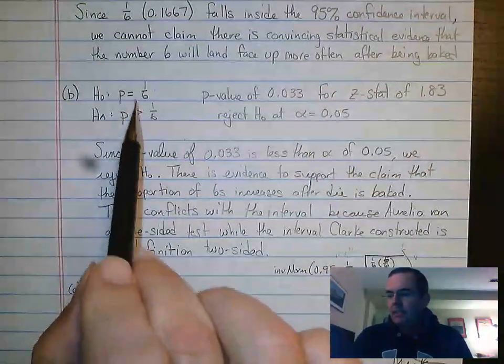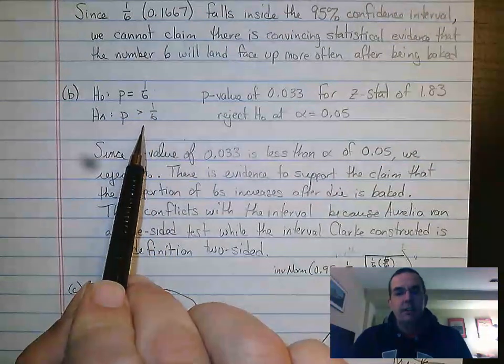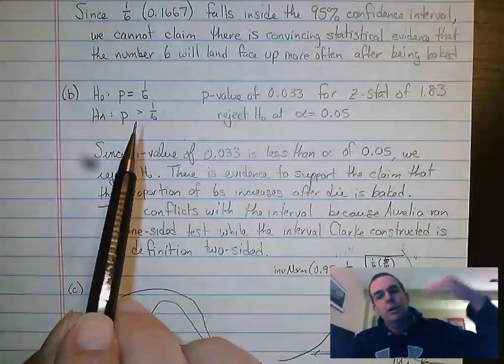These were her hypotheses. The null is that the proportion was one-sixth. The alternative is that the proportion was greater than one-sixth, that it actually changed, that the six showed up more often.